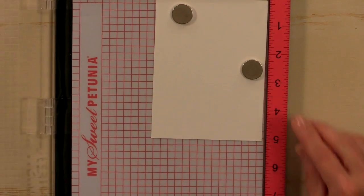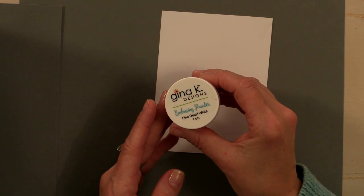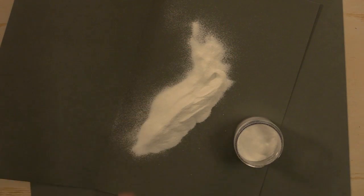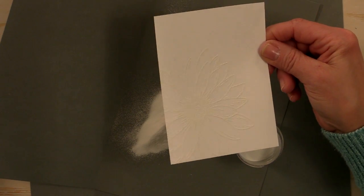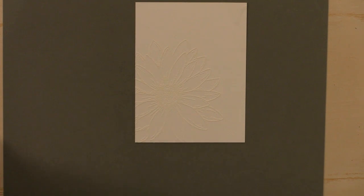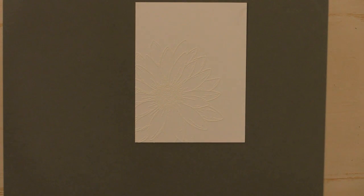Okay. And now I'm going to pick this up and get my MISTI out of the way. And I'm going to grab another piece of scrap paper here. And I'm going to use some of the Gina K Designs embossing powder in the fine detail white. And I'm going to sprinkle that over that entire flower.